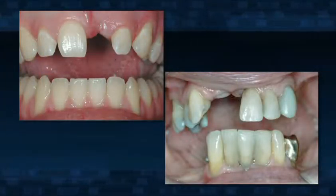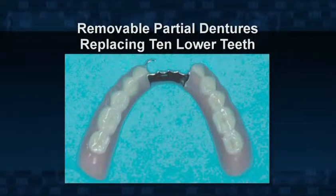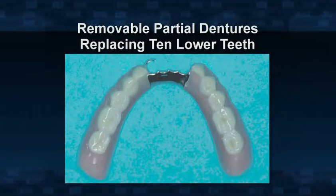You have some missing teeth and are probably not very happy about it. There are several ways to replace missing teeth. Some replacements are fixed and cemented into your mouth; others are removable for cleaning and repair. This video emphasizes removable replacements, discusses the alternatives, their advantages and disadvantages, relative costs, and what happens if you do nothing.